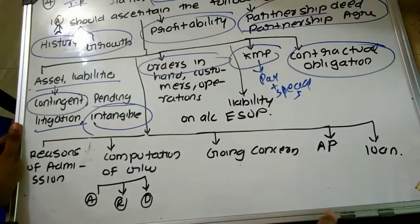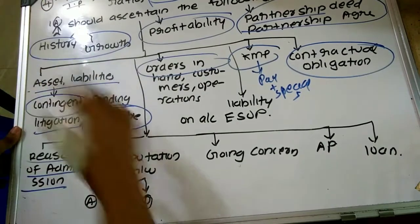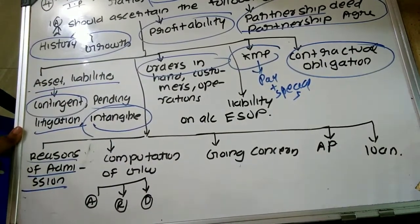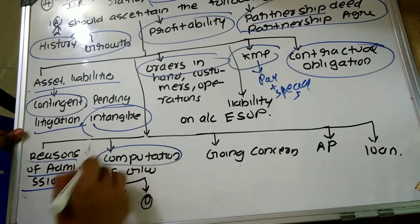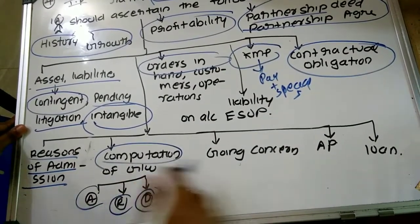They are also required to determine the reason for admission of the new partner—why is he getting appointed in the partnership firm? Plus, how to value or compute goodwill on admission, retirement, or death of a partner.